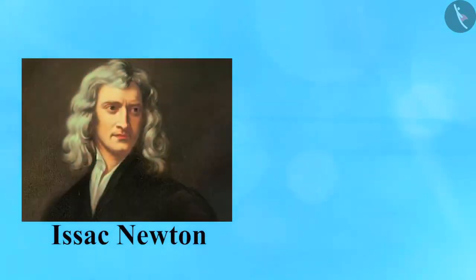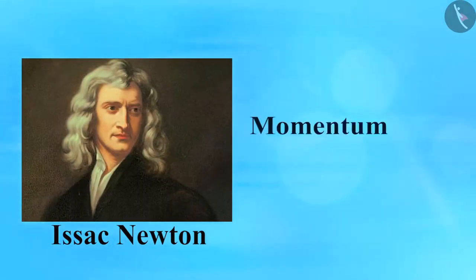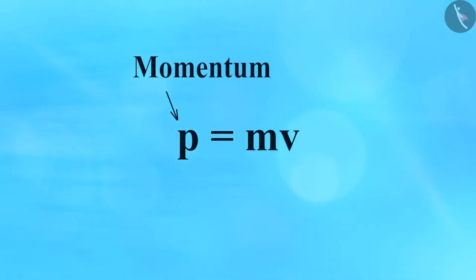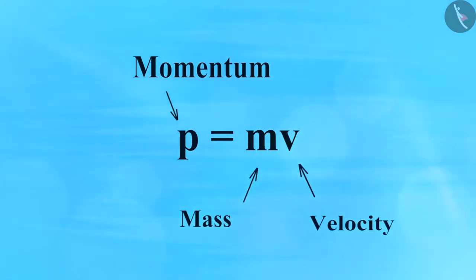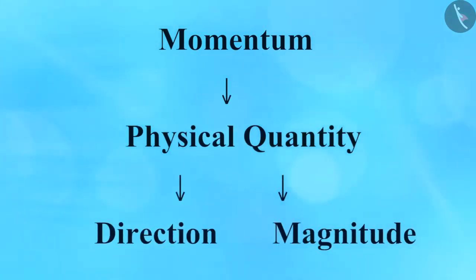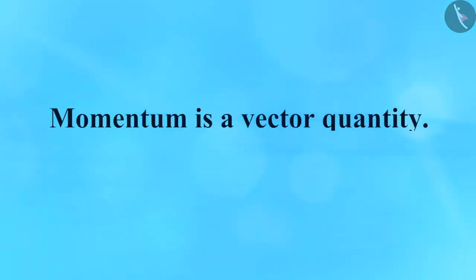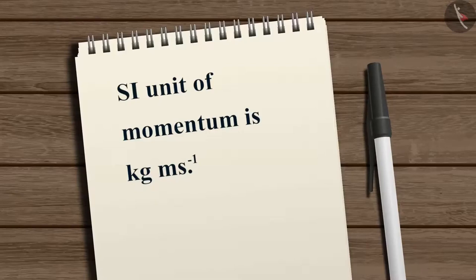Sir Isaac Newton introduced one such quantity called momentum. The momentum p of an object is defined as the product of its mass m and velocity v. Momentum is a physical quantity that has both direction and magnitude — the direction of momentum is the same as that of velocity. Momentum is a vector quantity, and its SI unit is kilogram meter per second.